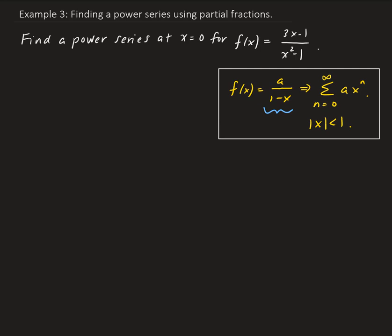In this example, we want to find a power series centered at x equals 0 for the given function. It's a rational function, so the ideal way to approach this is to apply partial fractions to split it up. Then for each part, we're going to use the definition of the geometric power series. Let's go ahead and use the partial fraction decomposition method.